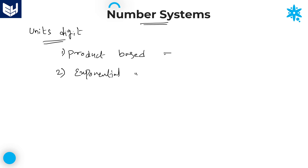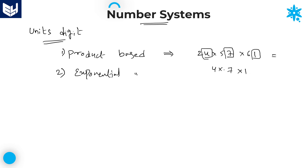Product based questions are very simple. For example, suppose the question is 24 into 57 into 61. What is the units place digit by multiplying all these numbers? Whenever we are solving product based questions, we take only the units place values: 4, 7, and 1. So 4 into 7 into 1 is 28, and the units place is 8. Therefore, the units place of the entire product is 8. Product based questions are not at all difficult — everyone knows how to calculate that.